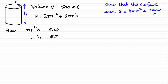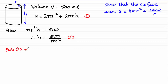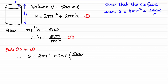So we have h equals 500 divided by πr². If I call the surface area expression equation 1, and this h expression equation 2, then all I have to do is substitute equation 2 into equation 1. So we therefore have that the surface area s equals 2πr² plus 2πr, and in place of h we write 500 over πr².